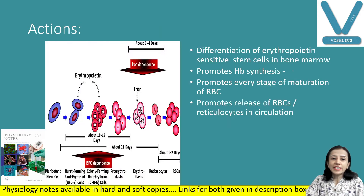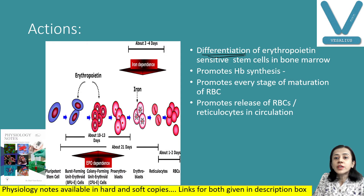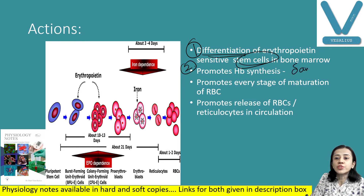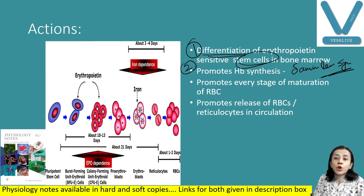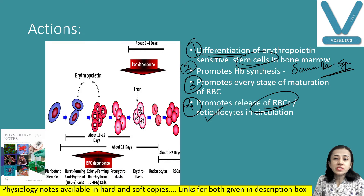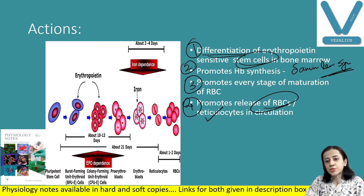The specific actions of erythropoietin are: first, it increases differentiation of stem cells. Second, it increases hemoglobin synthesis by potentiating the action of delta-aminolevulinic acid synthetase, required for hemoglobin synthesis. Third, it promotes every step of RBC maturation. Fourth, it stimulates the release of RBCs and reticulocytes into circulation.